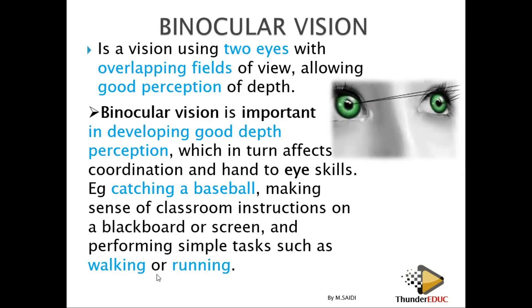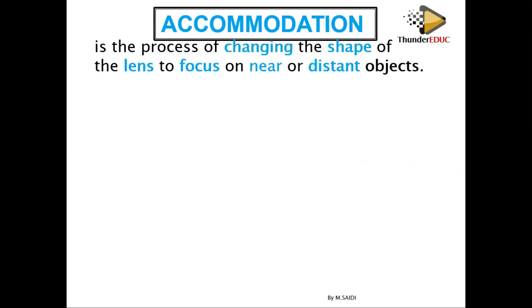A person with two eyes is more advantaged — that is binocular vision. This brings us to accommodation. Accommodation here refers to the ability of the eye to see near and far objects. It means the eye must change the focal length of the lens, which is the process of changing the shape of the eye lens to focus near and far objects.